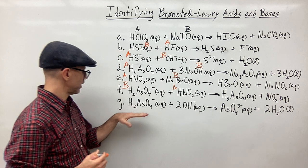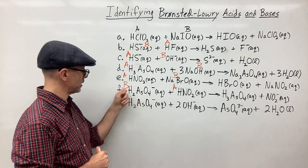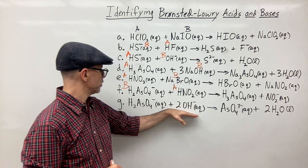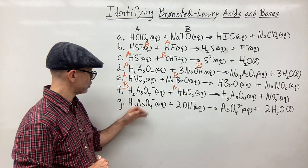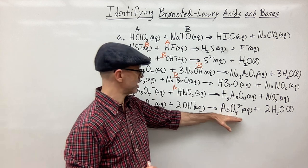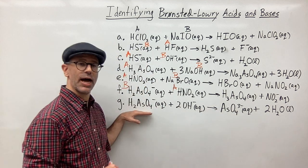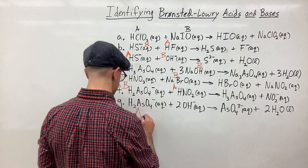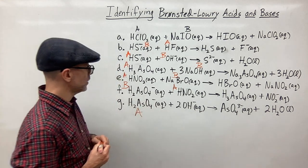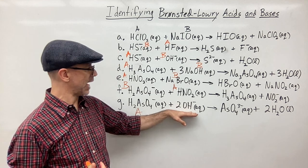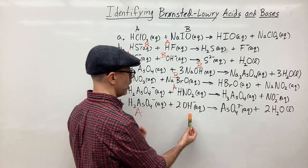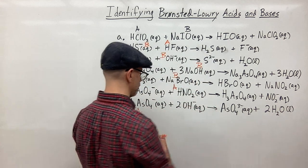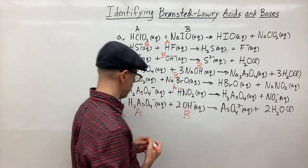Finally, we have H₂AsO₄⁻ and OH⁻. H₂AsO₄⁻ becomes AsO₄³⁻ on the product side, so it lost hydrogens — it donated them, making it the acid. The hydroxide, of course, is acting as the base, and you can see that OH⁻ picked up a hydrogen to form water. And that is how you identify your Bronsted-Lowry acids and bases.